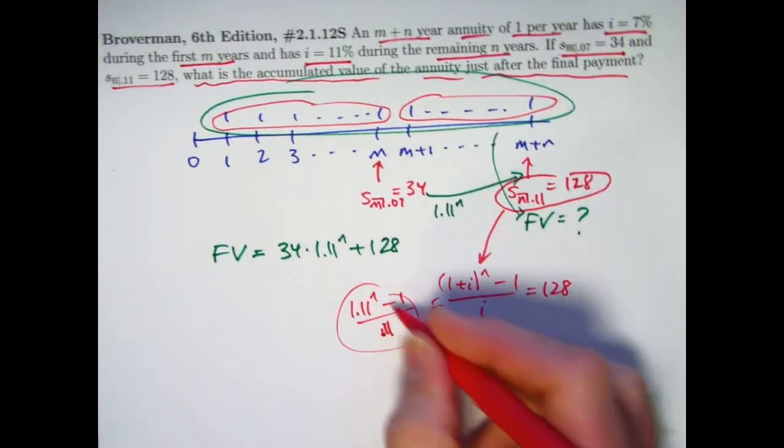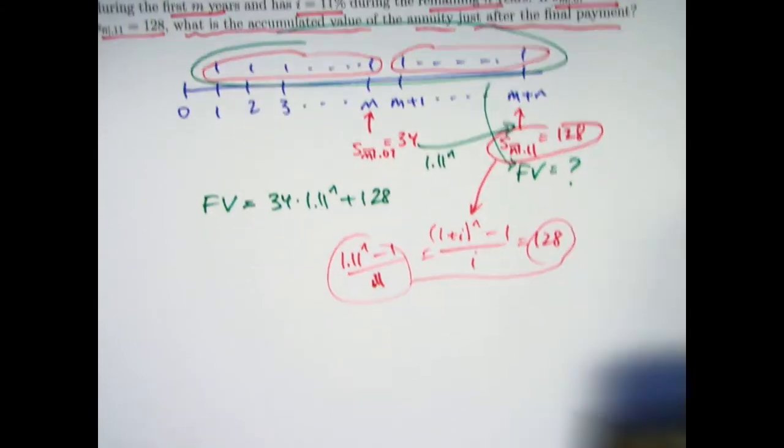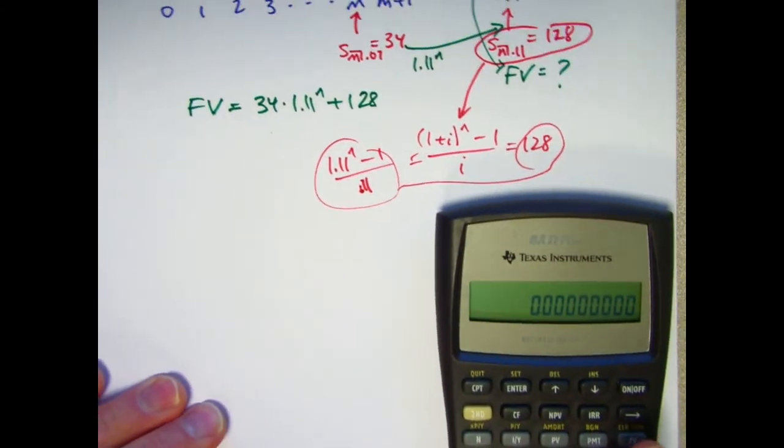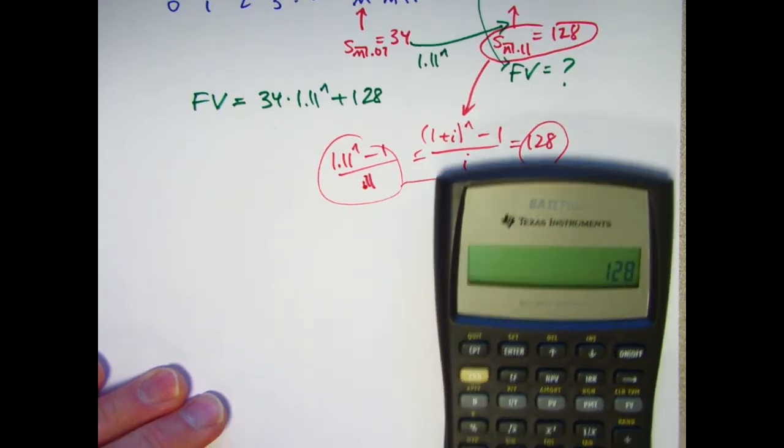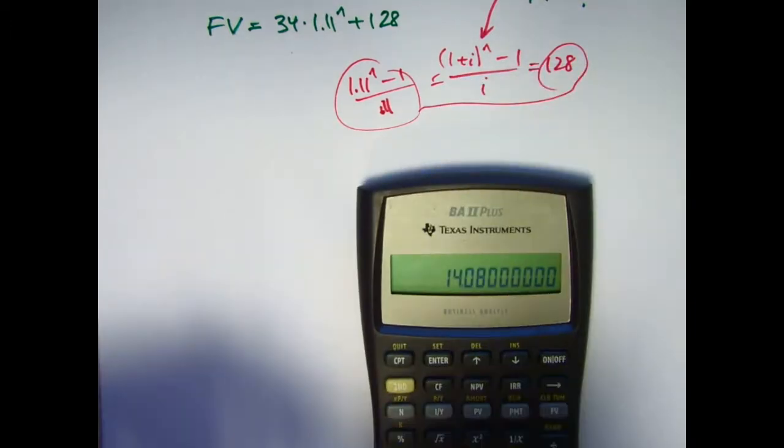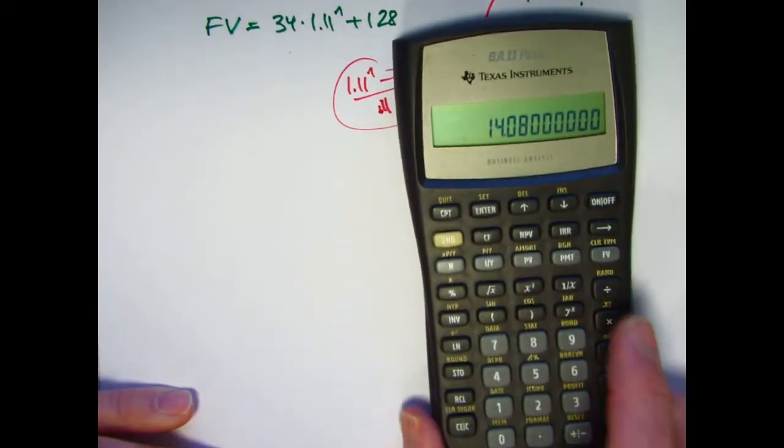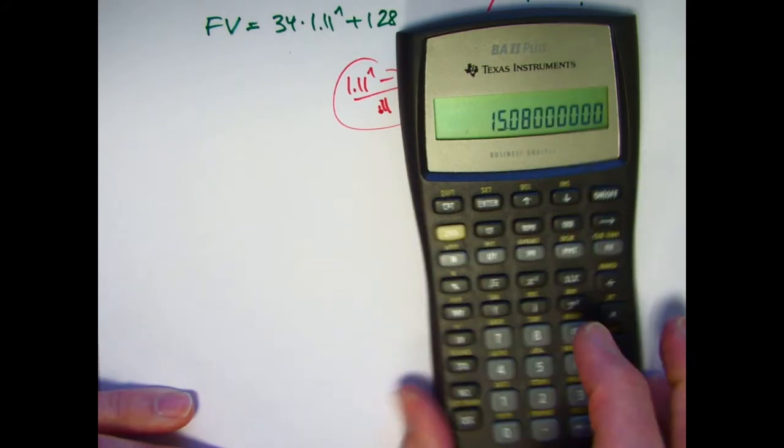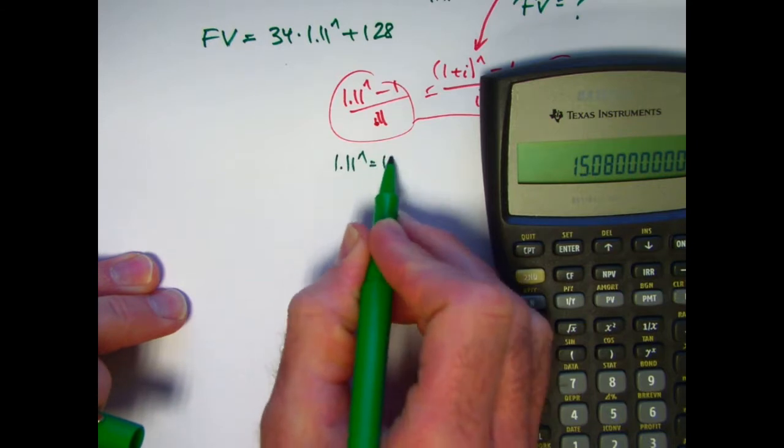So just take this equality there and solve not for N, but for 1.11 to the N. So I need to multiply both sides by 0.11. I'll have 128 times 0.11, 14.08. And then to solve for 1.11 to the N, I need to just add 1 to that. So it looks like 1.11 to the N is 15.08.